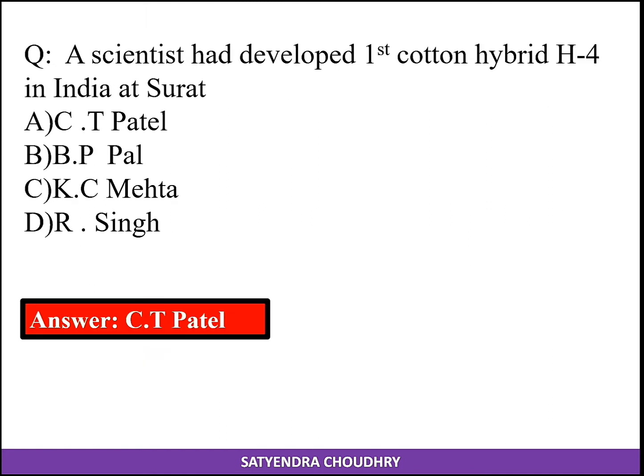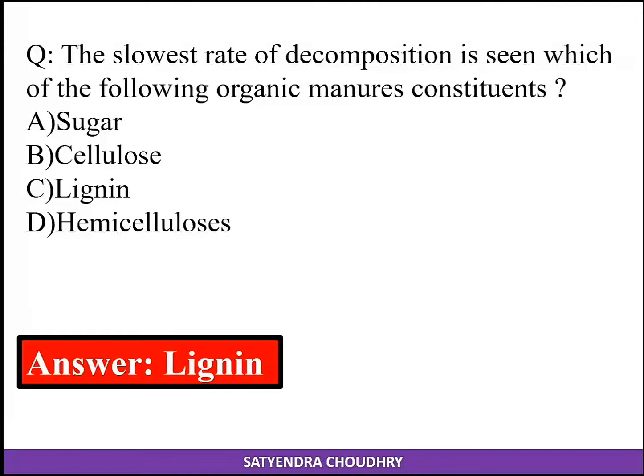A scientist who developed the first cotton hybrid in India at Surat was C.T. Patel. The slowest rate of decomposition is seen in which organic manure constituent? Lignin.